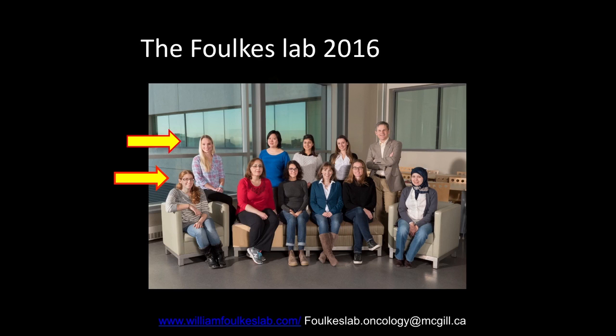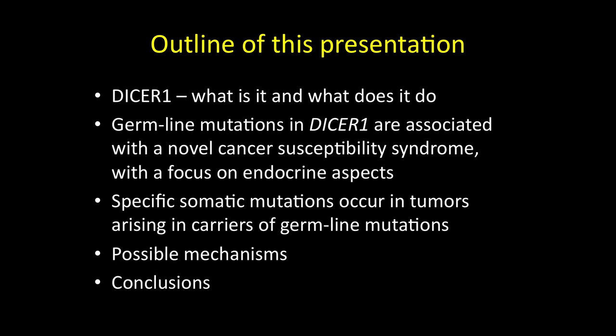The outline for this talk is about DISA. What is it? What does it do? I'm going to talk about germline mutations in DISA being associated with a novel syndrome that some of you have heard about, but others may not know much about. I'll talk about the specific somatic mutations occurring in the tumors of carriers and how they're different from the germline mutations, and a little bit about mechanisms.